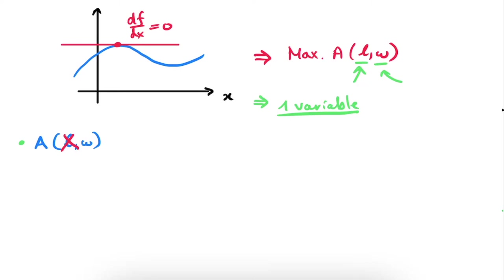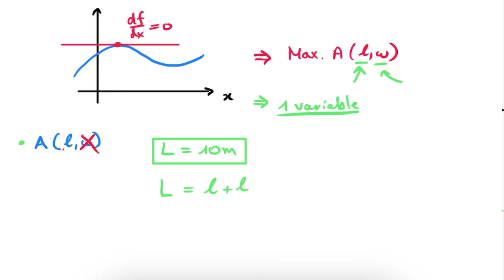What will help is to transform this function of two variables into a function of one variable. We want to go from A as a function of L and W to a function A of just one of them — eliminating, say, W. What piece of information didn't we use yet? The constraint: the total length of the fence — the circumference of the rectangle — is exactly 10 meters. We know the circumference equals 2L plus 2W, and now we have an equation involving both variables and our constraint.